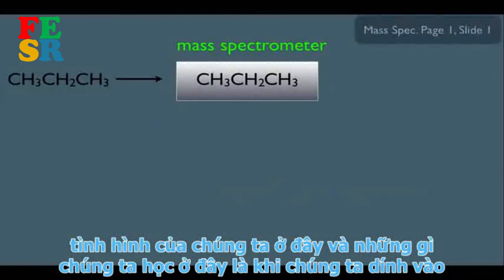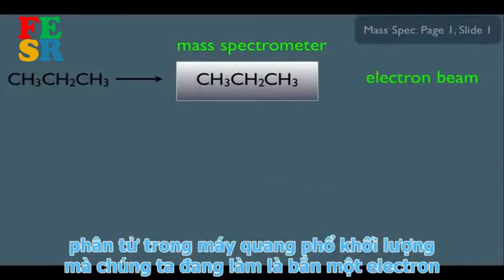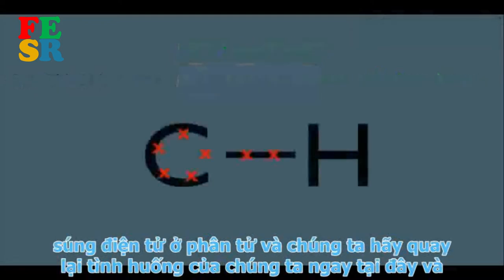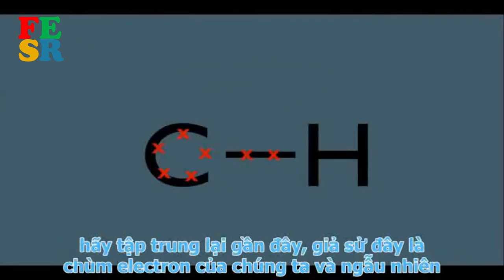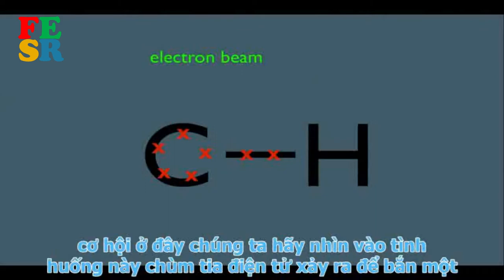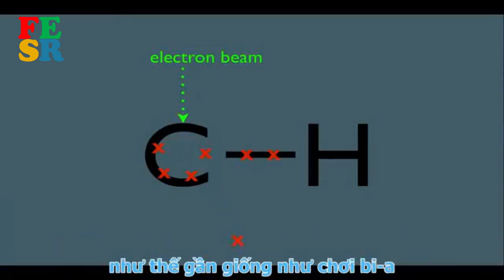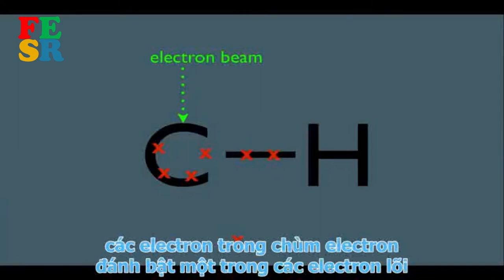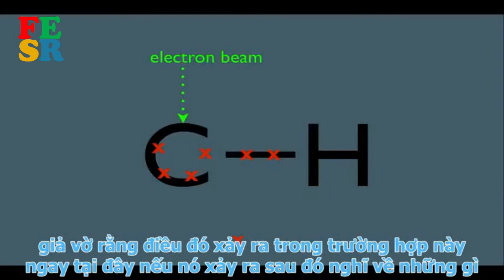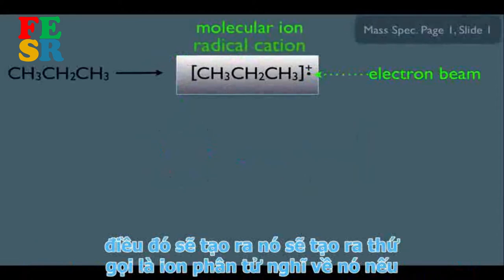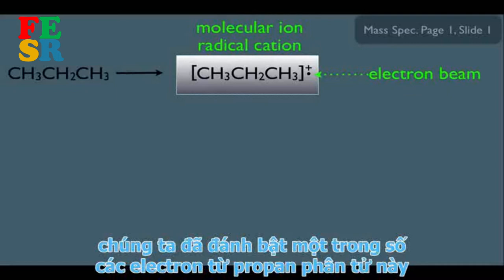When we stick a molecule in the mass spectrometer, we shoot an electron beam at it — think of it like an electron gun. By random chance, the electron beam can hit one of the core electrons and dislodge it, almost like playing pool. If that happens with propane, it creates what's called a molecular ion.